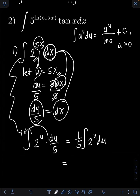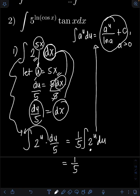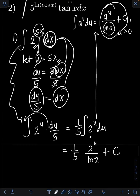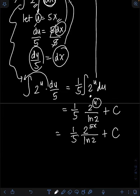We can now apply the formula to evaluate the integral of 2 raised to u du. The constant a is 2, so following the formula we get 1/5 times 2 raised to u over ln 2 plus c. Transforming back, u equals 5x, so the final answer is 2 raised to 5x over 5 ln 2 plus c.